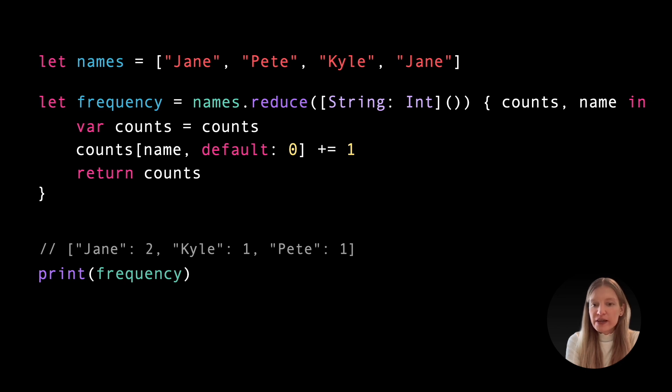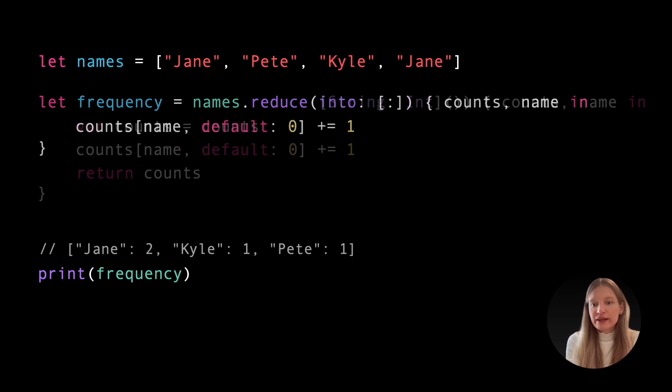Instead, it's often better to use the reduce(into:) variant. This version also takes an initial value, but the closure receives a mutable reference to the accumulating result and the next element from the collection. Unlike the standard reduce, it modifies the result in place, which avoids allocating and copying intermediate values. Because the result is mutated directly, reduce(into:) can be significantly more memory efficient, particularly when working with large or complex data structures.